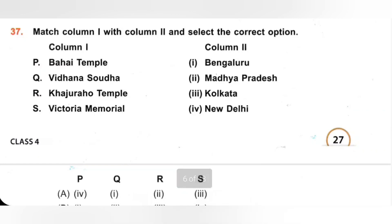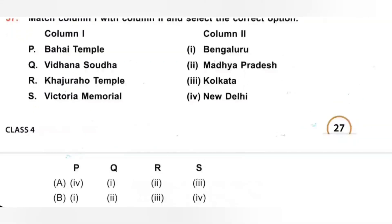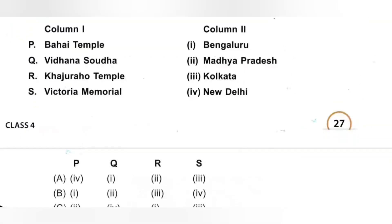37th. Match column 1 with column 2 and select the correct option. P. Bahai Temple — located in New Delhi. Q. Vidhana Soudha — located in Bengaluru. R. Khajuraho Temple — located in Madhya Pradesh. S. Victoria Memorial — located in Kolkata. So the match is P-4, Q-1, R-2, S-3. Option A is the correct answer.